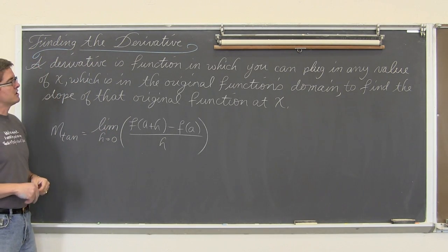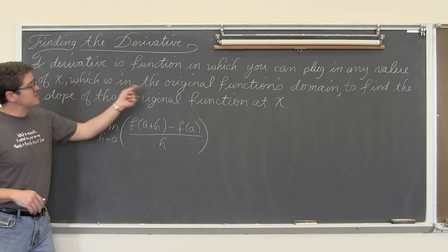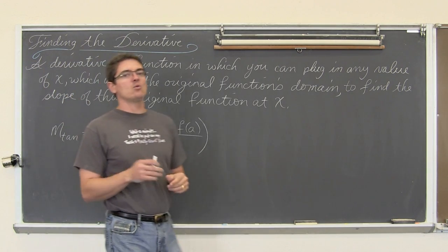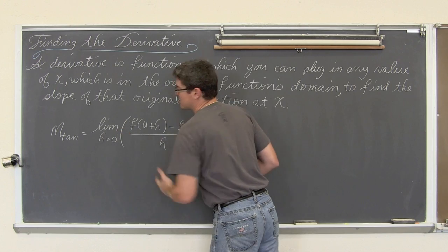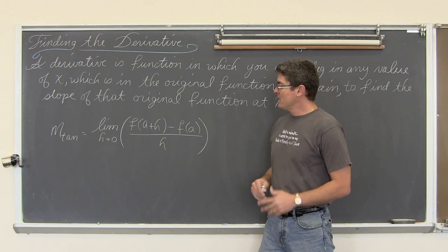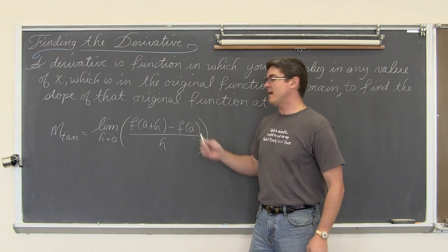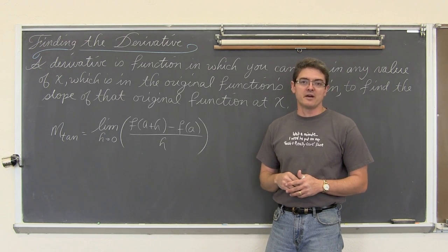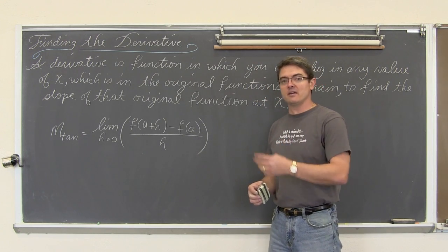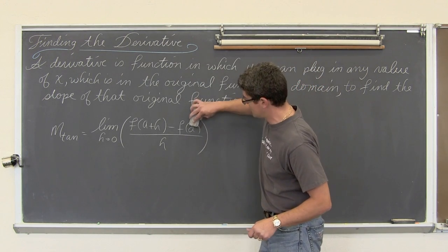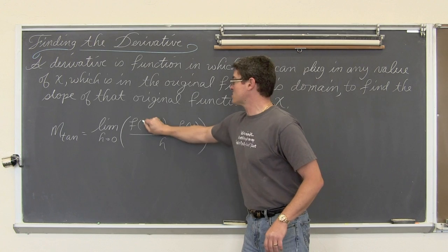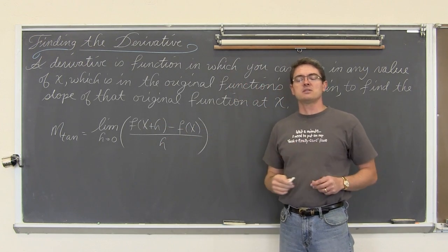A derivative is a function in which you can plug in any value of x which is in the original function's domain to find the slope of that original function at that value of x. This is what we just got done doing in my previous video — finding the slopes of tangent lines. In the original video they were giving us specific values of a at which they wanted us to find slope. Now we want an expression that will find a slope at any given value of x pretty much instantaneously. We don't want to find the slope at a particular value of a. We want a derivative which will tell us the slope no matter what the x value is, as long as it is in the domain of the function.